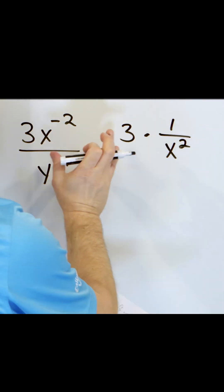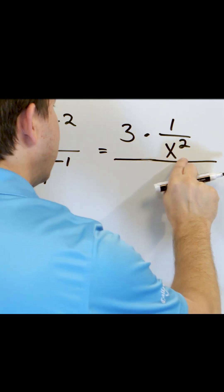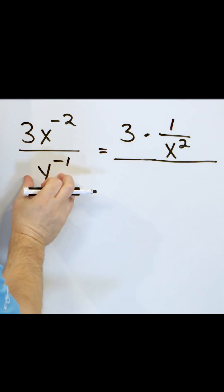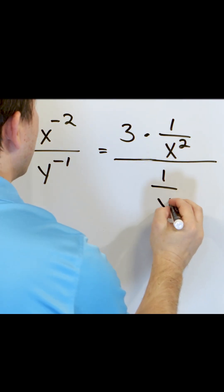But this whole thing lives in the numerator of a larger fraction, so I draw a larger fraction line down here, and then the bottom, I make this a fraction, 1 over y to the first.